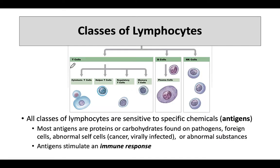Taking a closer look at these classes of lymphocytes, our T cells can be further divided into cytotoxic T's, helper T's, regulatory T's, and memory T's. Cytotoxic T's, as their name suggests — cyto means cell, and toxic means poison — so a cytotoxic T is poisonous to other cells.